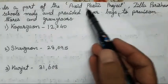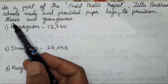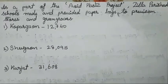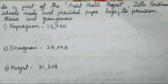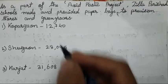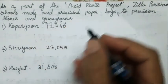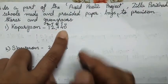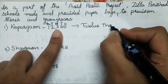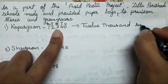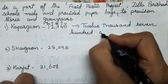Now the third question: as part of an avoid-plastic project, Zilla Parishad school made and provided paper bags to provision stores and groceries. You all have to read the taluka-wise numbers of bags and write the numbers in words. It is very easy to read — first write unit, tens, hundred, thousand, ten thousand. So it is going to be twelve thousand seven hundred and forty.